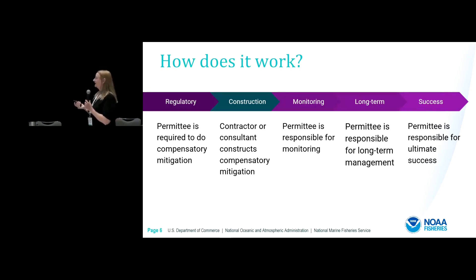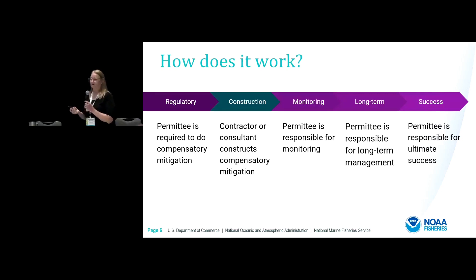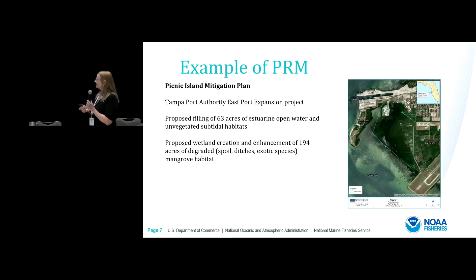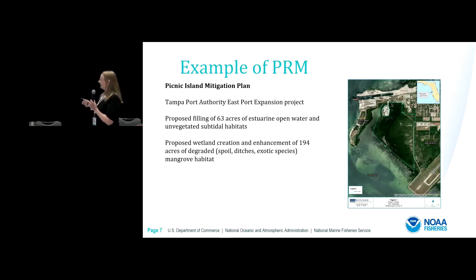One of the reasons that mitigation banking got started is because a lot of developers didn't want that responsibility. They're good at building office buildings — they didn't want to also be good at building and maintaining aquatic resources. Here's an example of a permittee responsible site: the Tampa Port Authority expansion project, where they were filling 63 acres of estuarine open-water and unvegetated subtidal habitats, and they will be doing wetland creation and enhancement of a larger amount of habitat in that area.